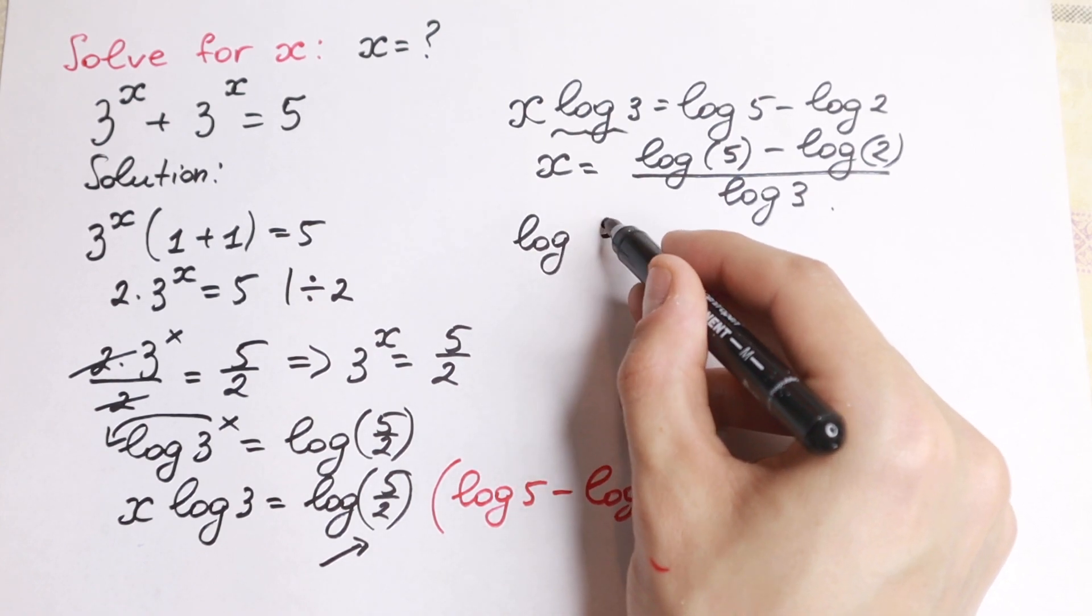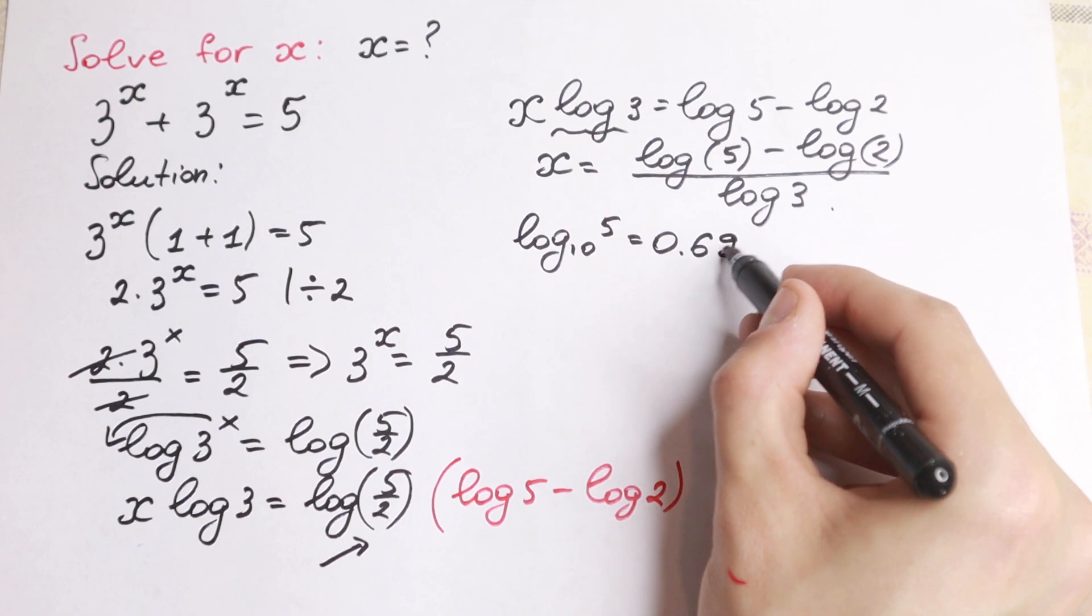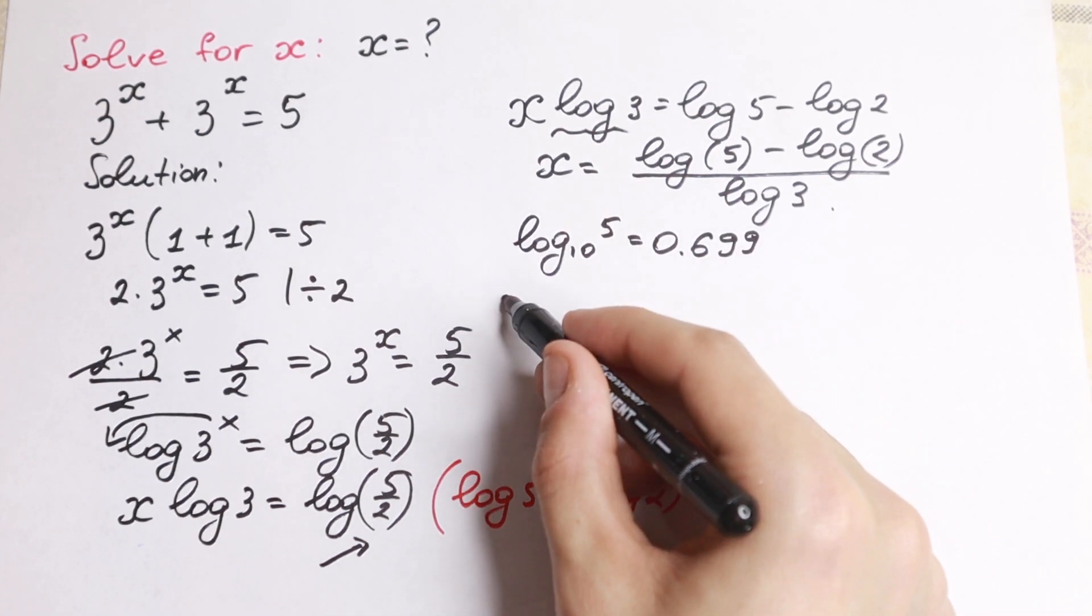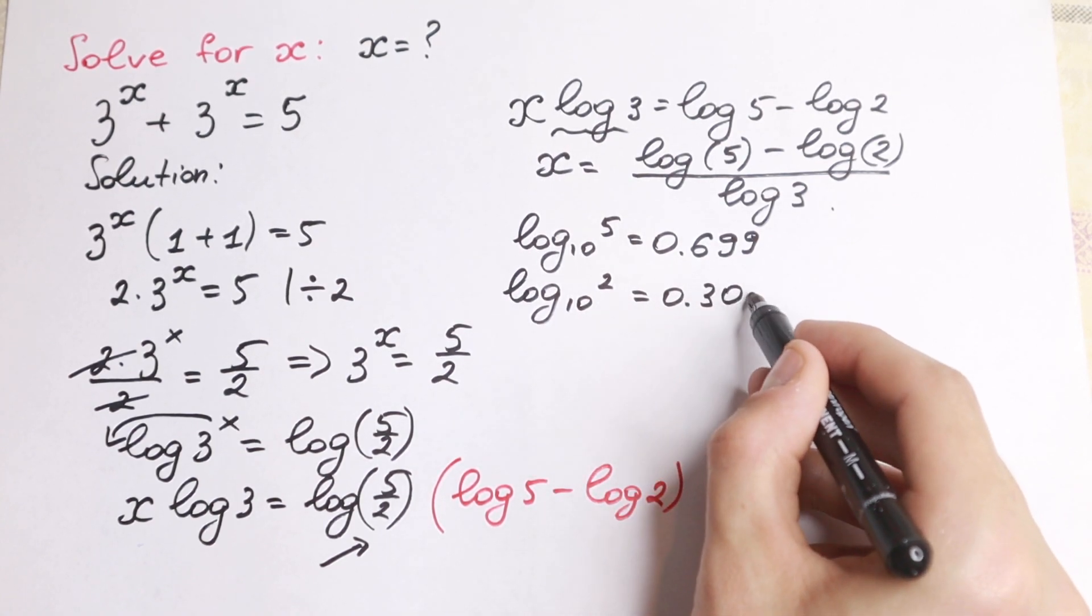log 5 base 10 equal to 0.699, and log base 10 of 2, we will have 0.301.